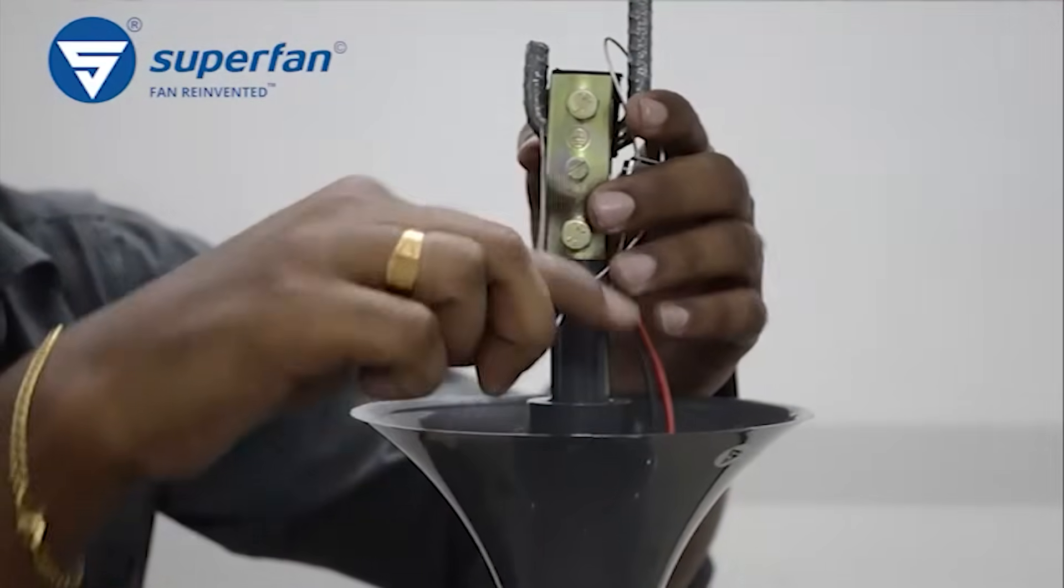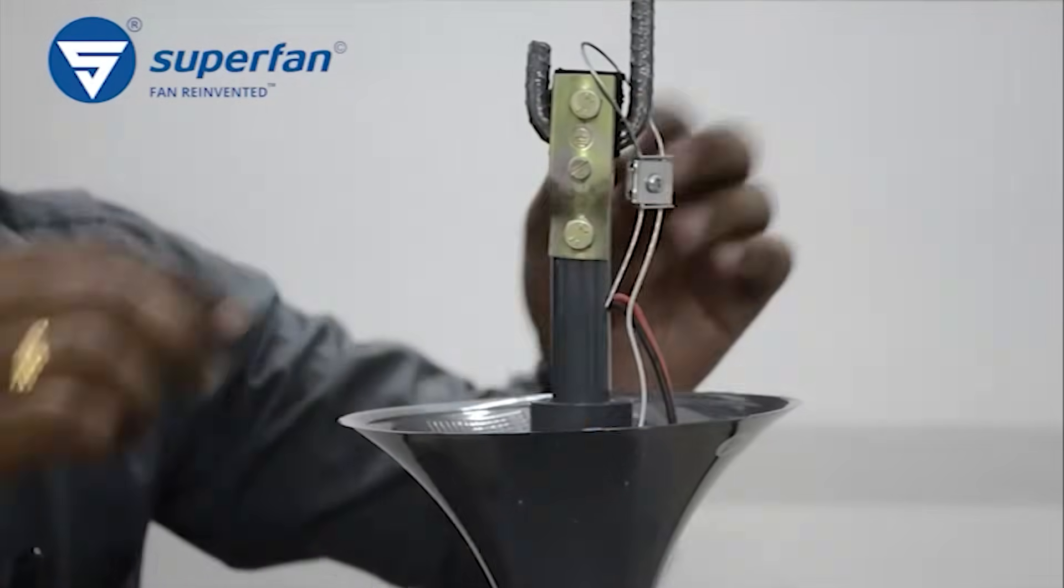Fold the free end of the safety rope back into the down rod. In case of assistance, please call 1-800-425-78737.